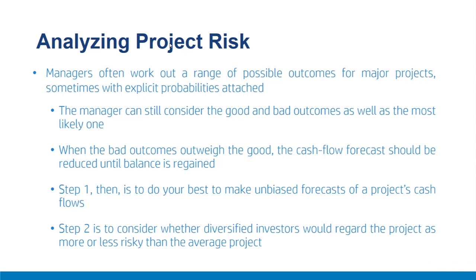Fudge factors in discount rates are dangerous because they displace clear thinking about future cash flows. In summary, to estimate cost of capital for a project with risk different from the firm's average, look for pure play companies with similar risk. Asset betas are primarily affected by variability of earnings or cash flows and operating leverage. The diversifiable component of risk should not be considered when estimating the asset beta. Project cash flows should be valued accounting for the dynamic nature of risk that changes as time passes.